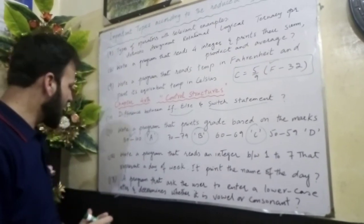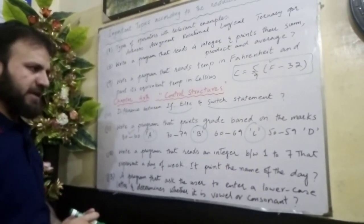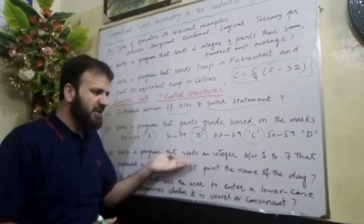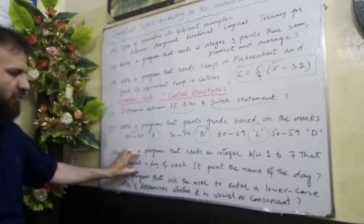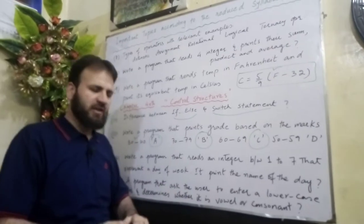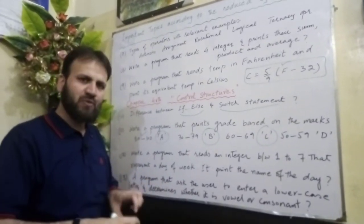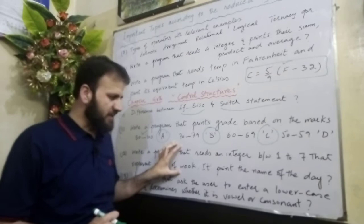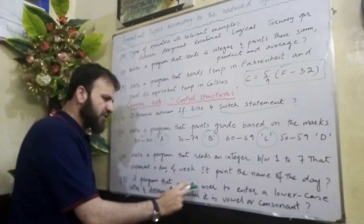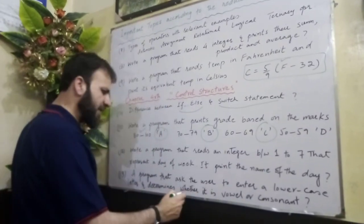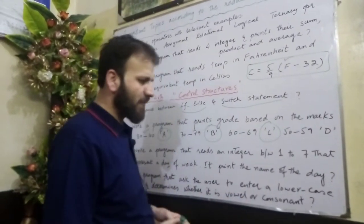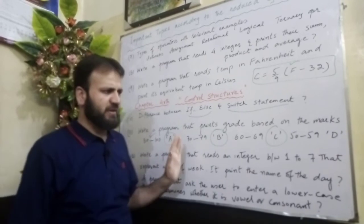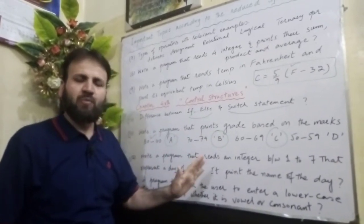Question twelve: write a program that reads an integer between 1 to 7 representing a day of the week and prints the name of the day — if 1 is entered, print Monday; 2, print Tuesday; 3, print Wednesday, and so on. This is an important question for board papers. Question thirteen: write a program that asks the user to enter a lowercase letter and determine whether it is a vowel or consonant. I have explained all these programs in detail in my tutorial videos on my YouTube channel.